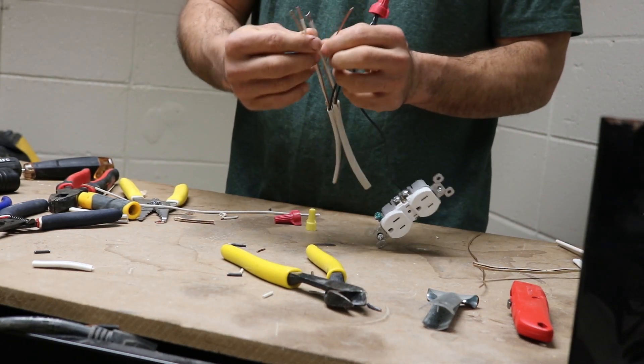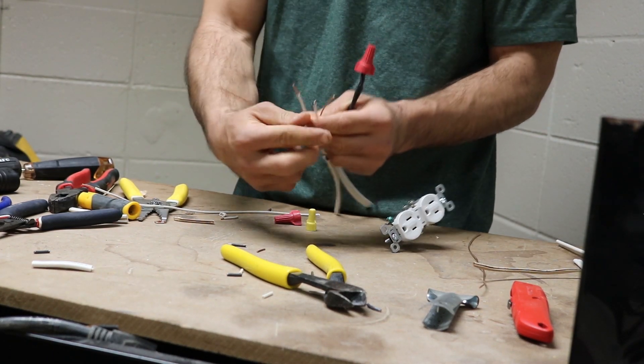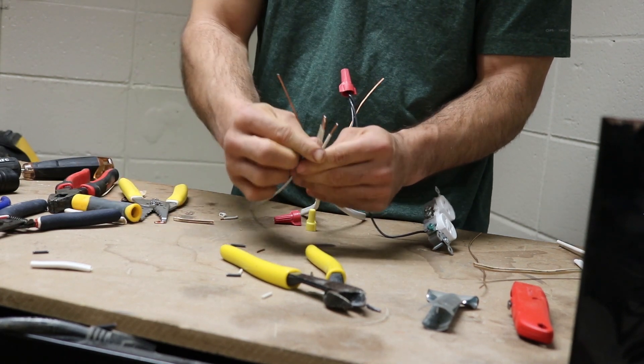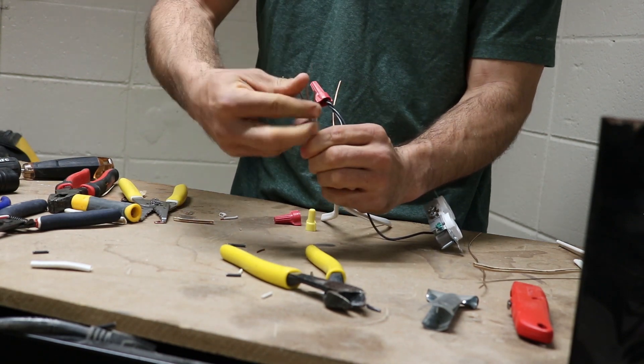You'll also do that with your white wire. Your white wire will go to your silver screw on your terminal. So you'll put them all three the same length like so.